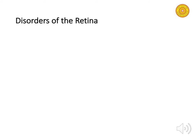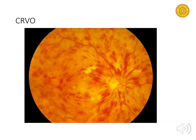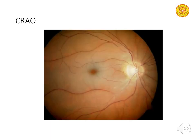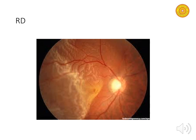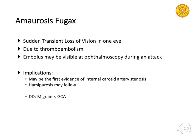Retinal disorders include central retinal venous occlusion, central retinal artery occlusion with the characteristic cherry-red spot, retinal detachment where the retina detaches from the choroid, and age-related macular degeneration — a very common cause of blindness in the elderly. Further reading is recommended on the ophthalmoscopic appearances of these conditions.